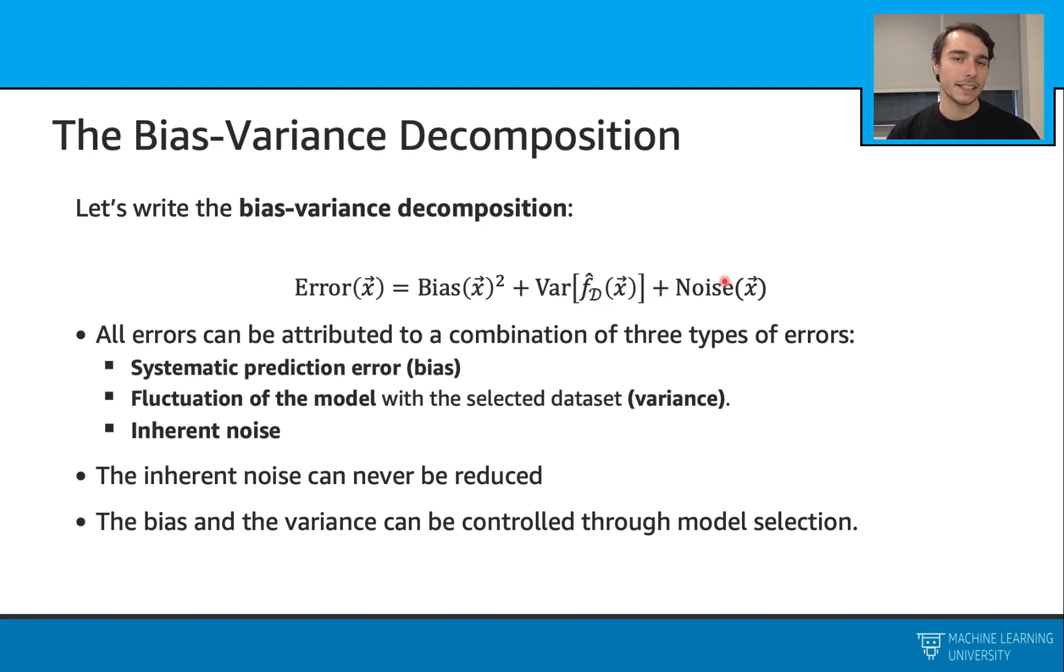Here this is telling us that all the errors that our models are making are coming from these three types of errors. Bias is the systematic prediction error associated with the model. Variance is the fluctuation of the model with the selected data set. And the noise is just the inherent noise in this system.